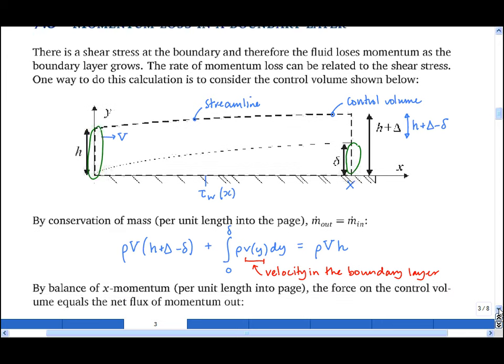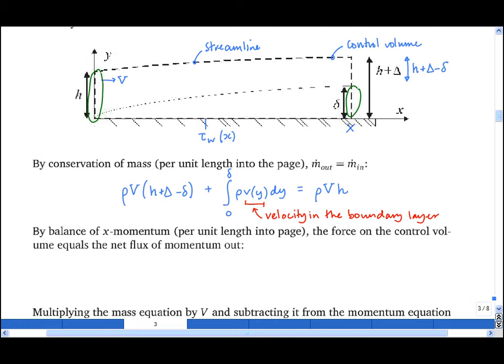We will now consider the balance of x momentum per unit length into the page. Assuming no pressure drop in the x direction, the total force on the control volume comes from the shear stress at the boundary. This force is in the opposite direction to x, so it's minus the integral of x from zero to big X of tau wall, the shear stress at the boundary, which is a function of x, times dx. And this is equal to the momentum flux out minus the momentum flux in.